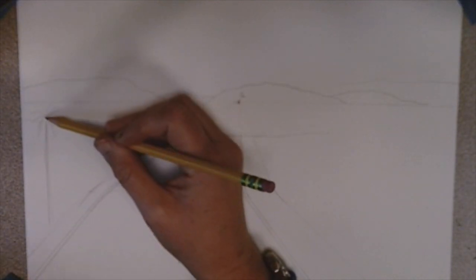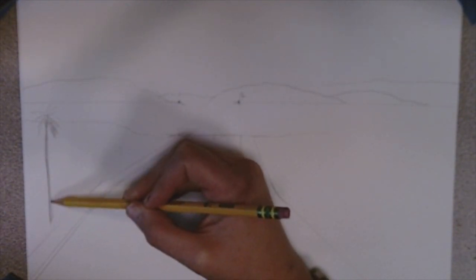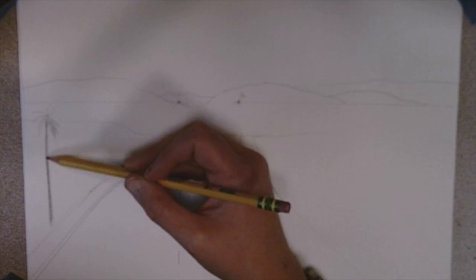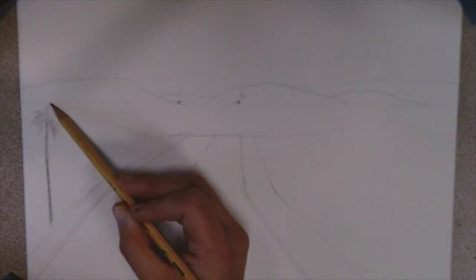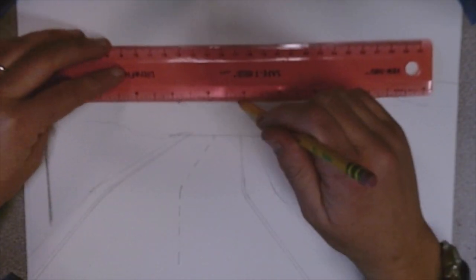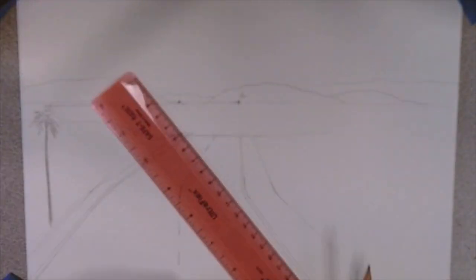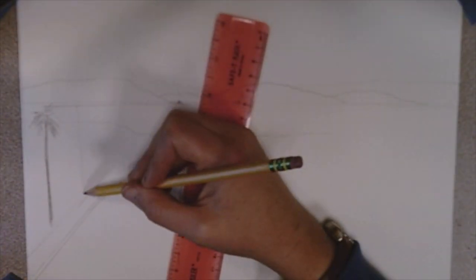But since we're doing a row of trees, we're going to make all those trees equal in height. But because it's going back to that one point, it's in one point perspective, all the trees are going to get slightly smaller and closer together as they go back. So in order to get that height perfect, you use the vanishing point. And that's what I'm doing right there.